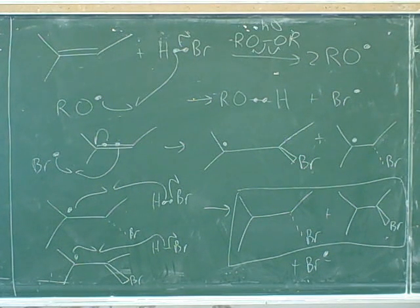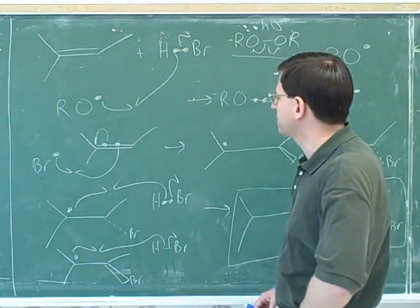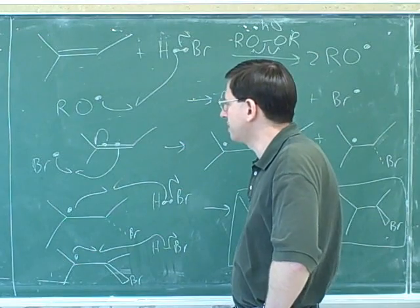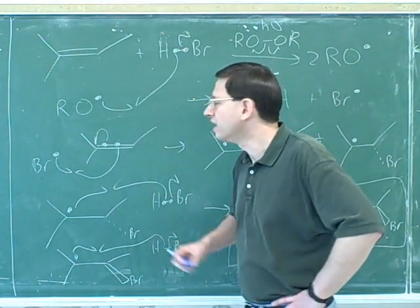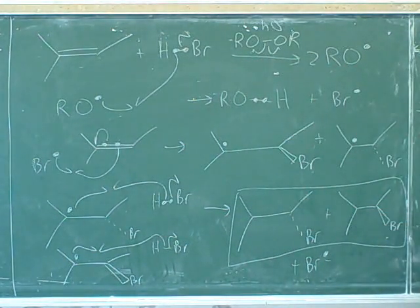This is the first example we've seen of anti-Markovnikov. Every other example we've seen so far has been Markovnikov. Wait, can you explain why it's anti-Markovnikov again? Well, by definition, Markovnikov is when the electronegative atom ends up on the more-substituted carbon in the alkene. And anti-Markovnikov is when the electronegative atom ends up on the less-substituted.